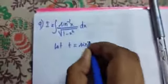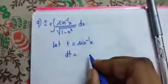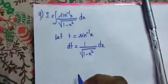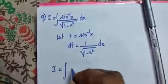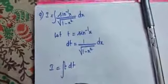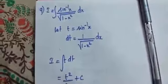Now we pass on to our 9th problem. I is equal to integral of sin inverse x divided by root of 1 minus x squared, into dx. Let t be equal to sin inverse x. The differentiation of sin inverse x is 1 divided by root of 1 minus x squared, into dx. So I is equal to integral of t dt, which equals t squared by 2 plus c. Substituting back, the answer is sin inverse x, whole squared, divided by 2 plus c.